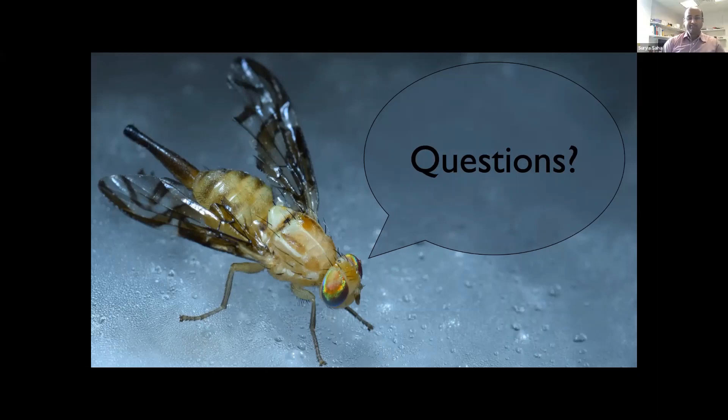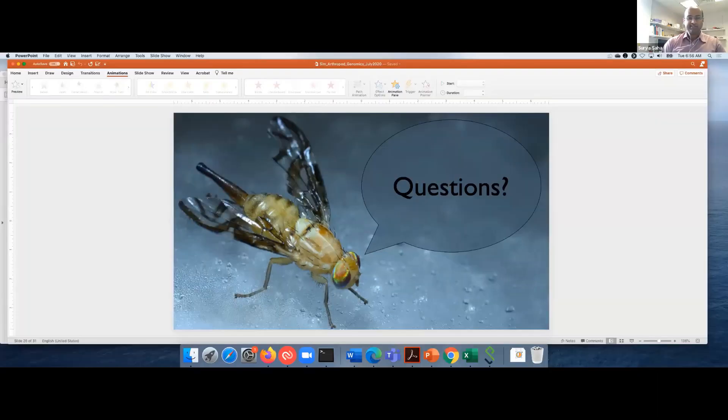Thank you so much for that excellent talk, Sheena. I think this was a nice example of showing what highly contiguous long-range assemblies can allow in terms of doing structural comparisons. Since we are running right on time, let's go on over to Tom, who will talk to us about his beautiful aphid genomes.